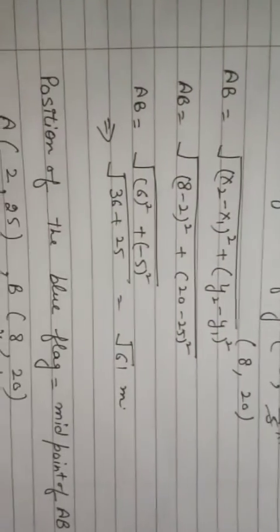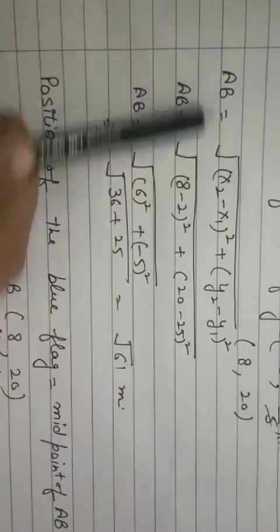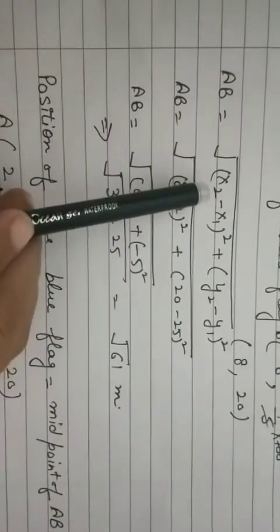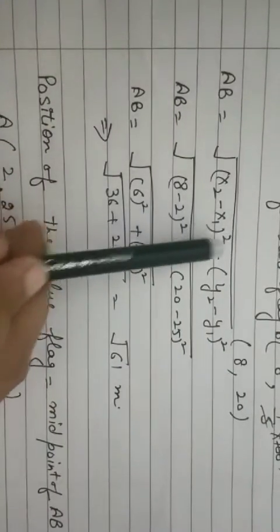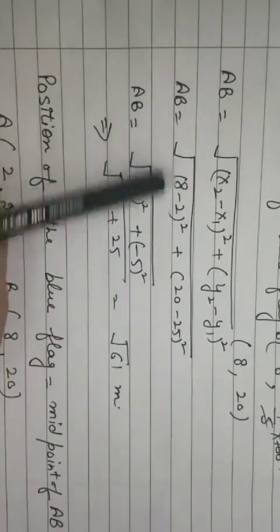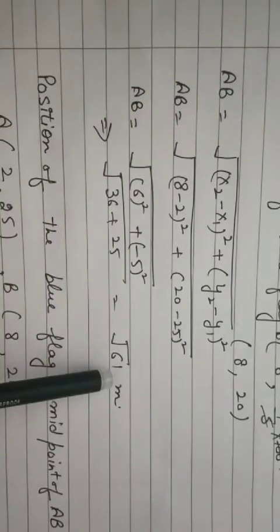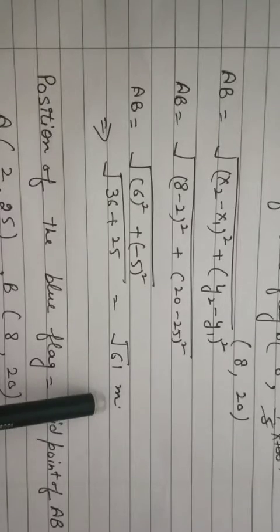First question was find the distance. So AB distance means distance formula will be used. X2 minus X1 whole square plus Y2 minus Y1 whole square, square root. Solve, this gives root 61 meter. Okay.